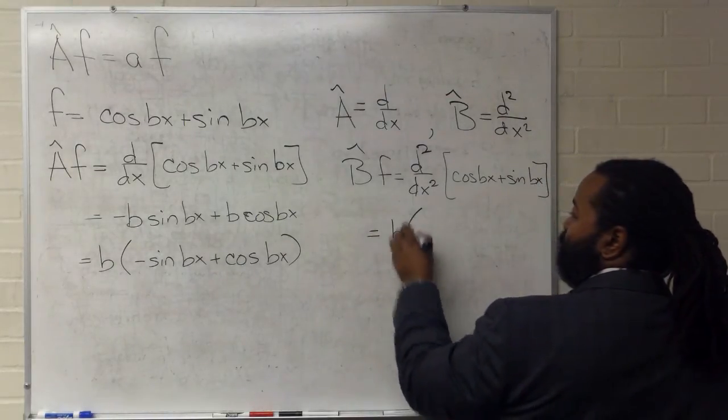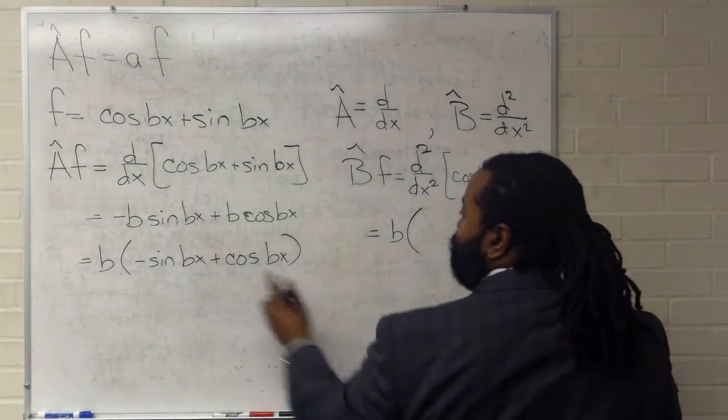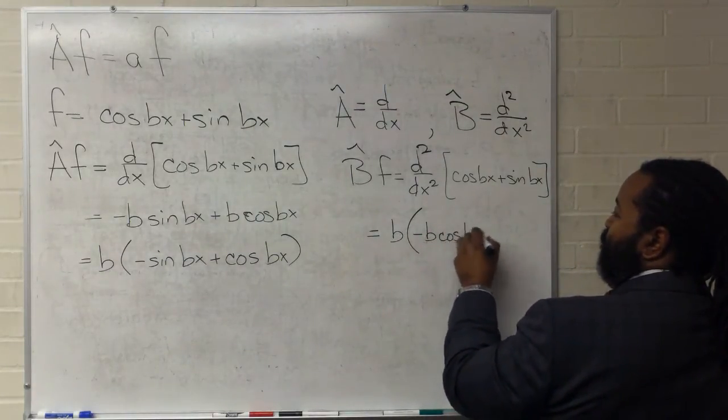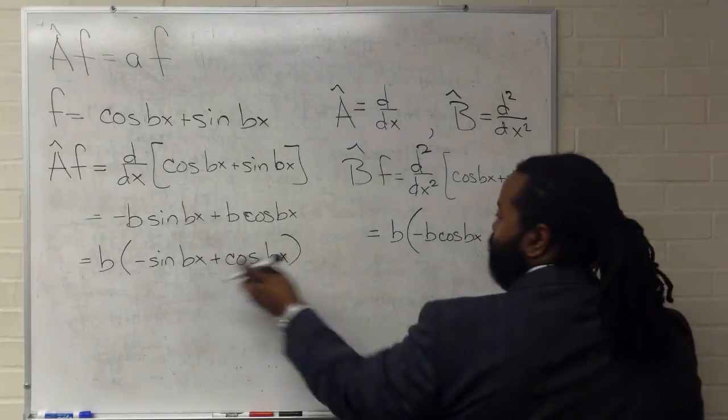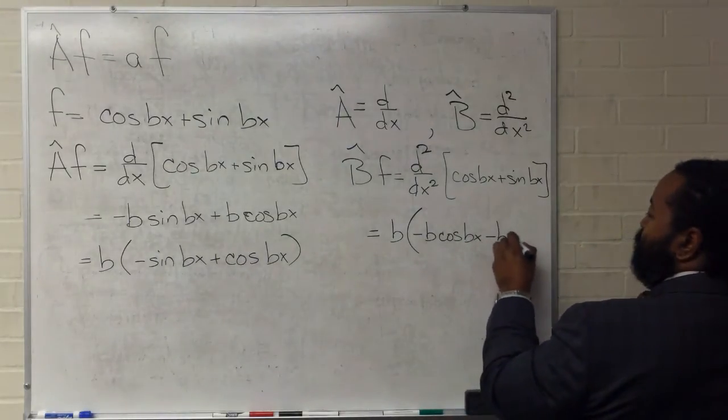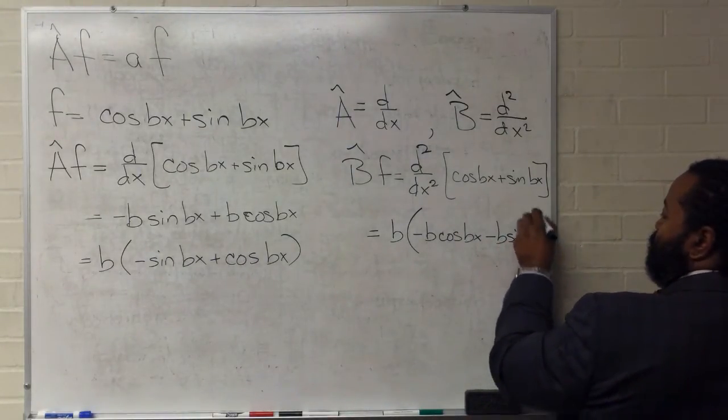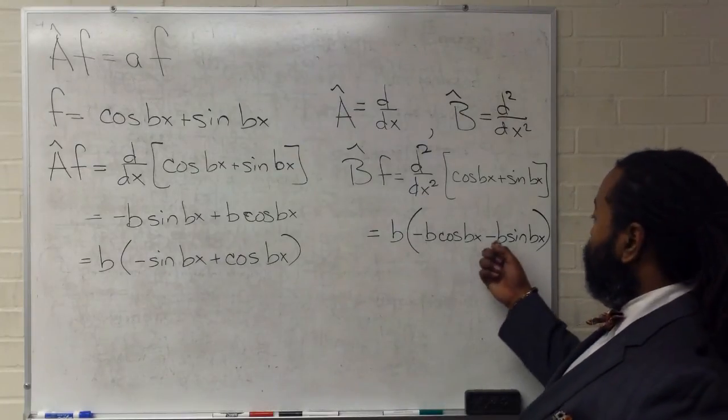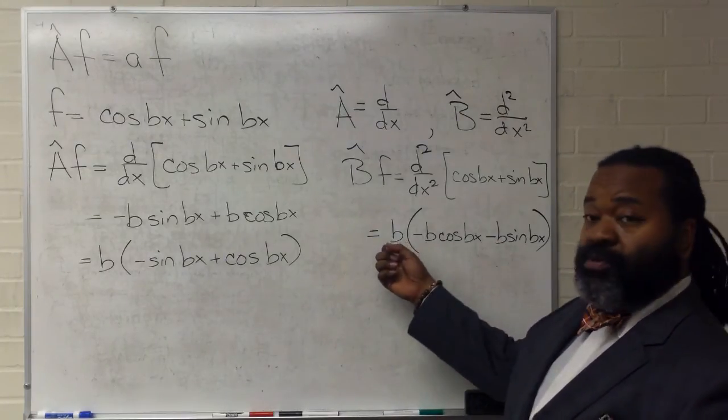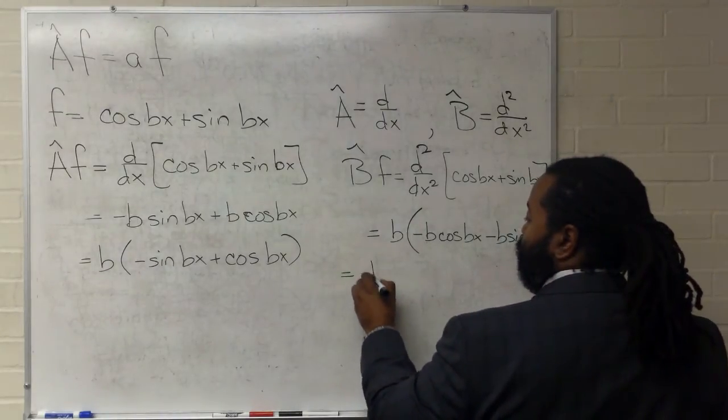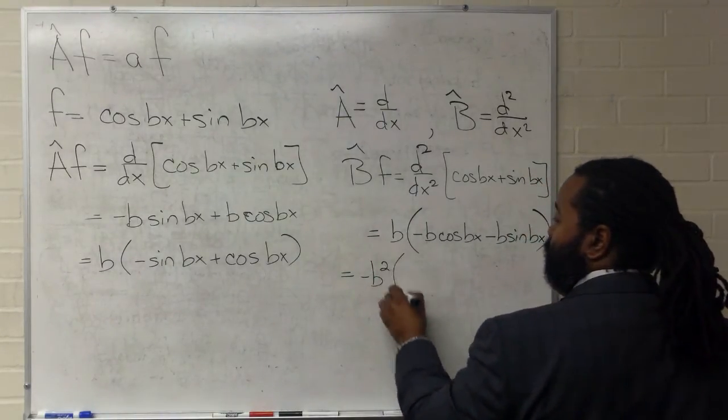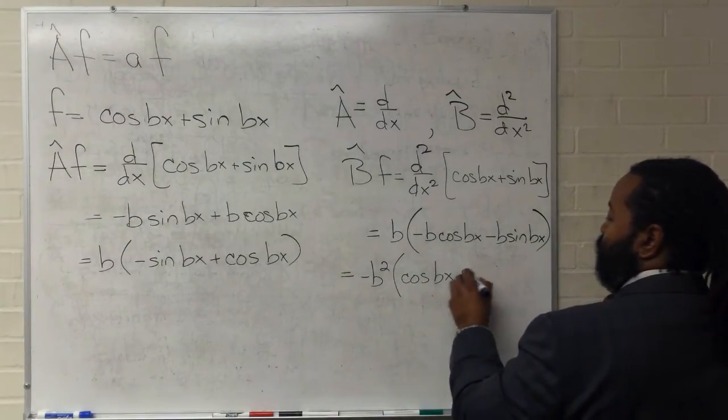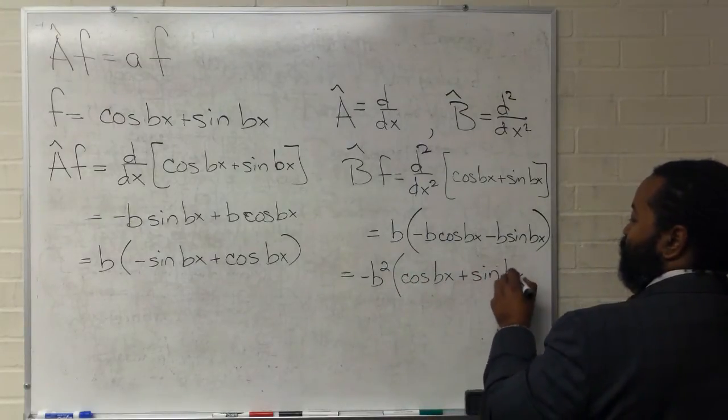In this case, we already have the b sitting on the outside. This will become minus b cosine bx, and this will be minus b sine bx. So, that's our second derivative of our function. Now, I can pull out the minus b multiplying. And I'll get negative b squared times cosine bx plus sine bx.